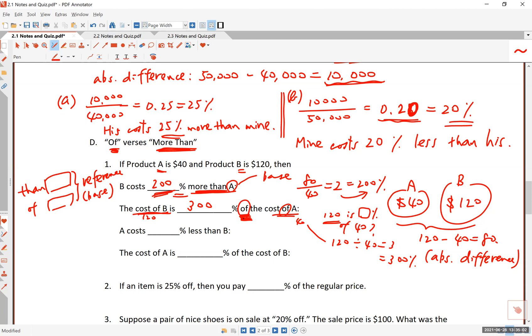So while B costs 200% more than A, the cost of B, the price of B is actually 300% of the cost of A. Hope it's clear. Next, A costs what percent less than B? Now, less than means we have to figure out what that absolute difference is relative to the reference. Remember, the reference number follows less than? Then, the word than. So then you divide this by 120.